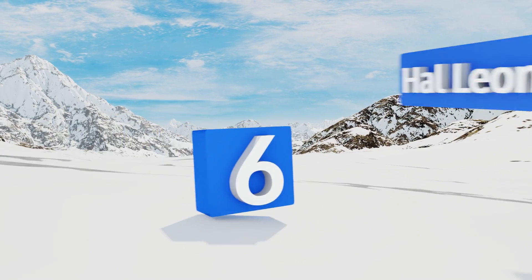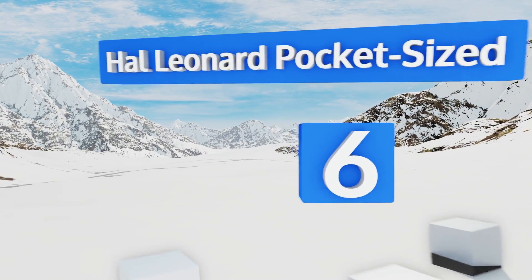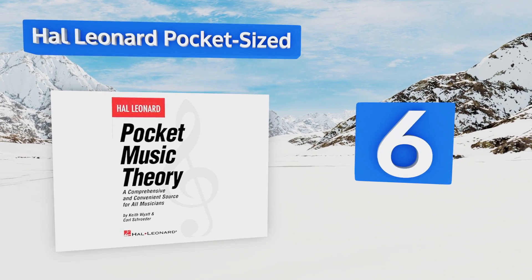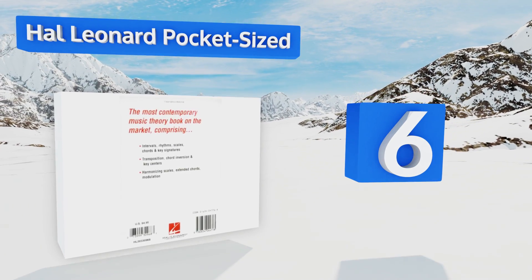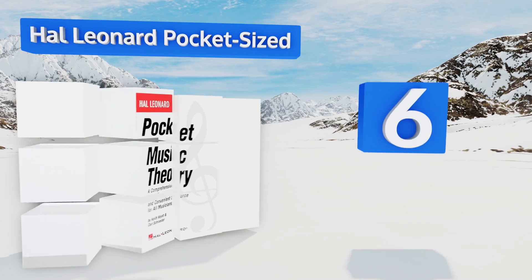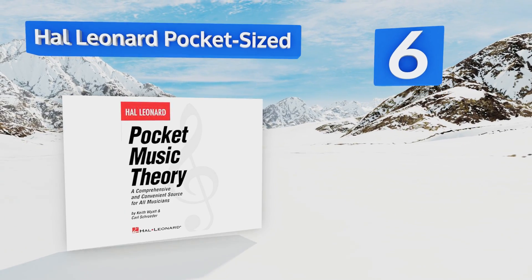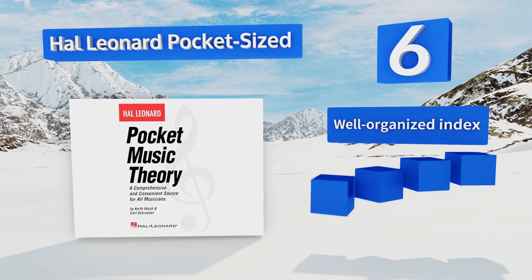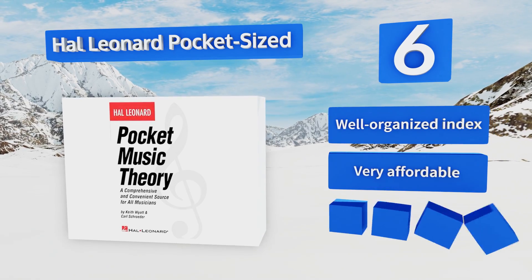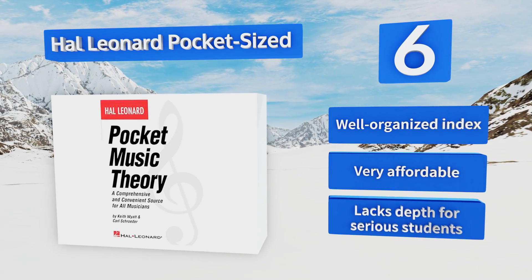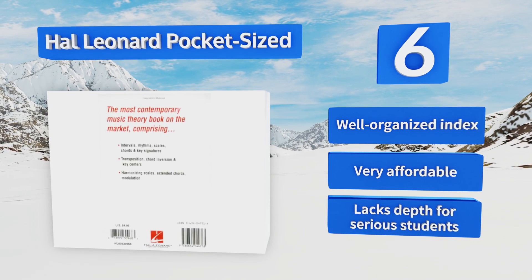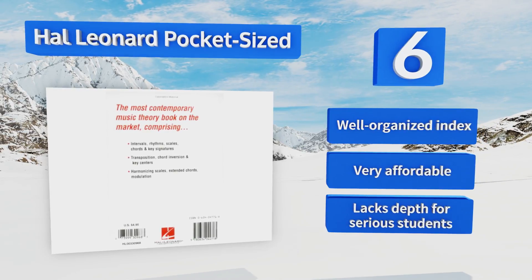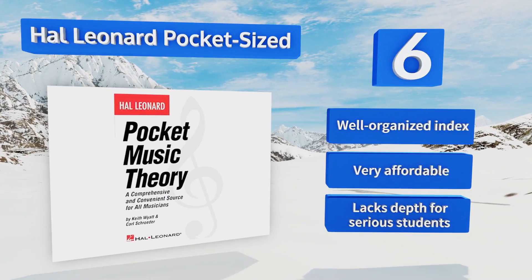Moving up our list at number six, the Hal Leonard pocket-sized guide is a condensed reference guide that covers everything from basic intervals and scales to modulation and reharmonization. It's a great option whether you're a beginner new to the subject or a touring musician looking for refreshers between gigs. It includes a well-organized index and is very affordable, however it lacks depth for serious students.